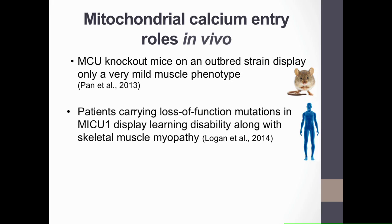In 2014, there was the identification of the first human mitochondrial disease directly caused by mutations in proteins that mediate mitochondrial calcium entry. Patients carrying loss-of-function mutations in MICU1 display a learning disability, along with a skeletal muscle myopathy. The observation that MICU1 patients have a learning disability first gave us the idea that mitochondrial calcium entry is one of the mitochondrial functions important for cognitive processes.